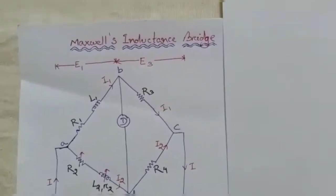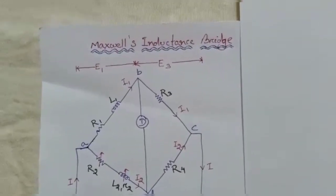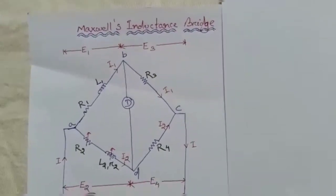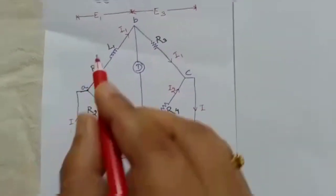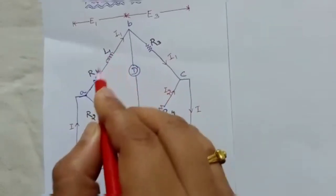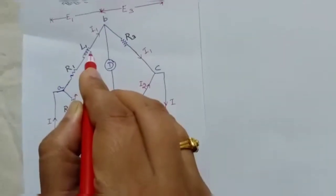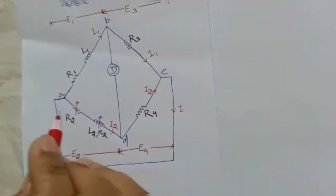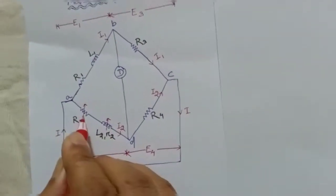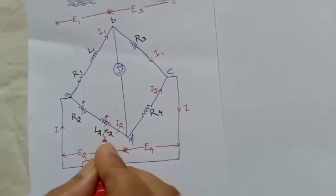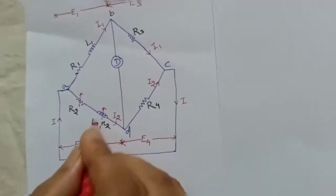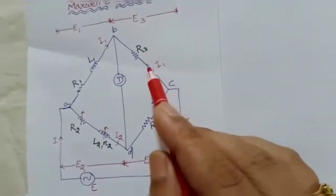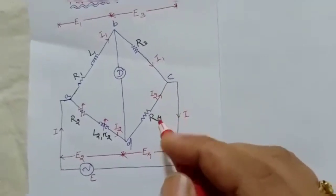Hello everyone. Today we will discuss Maxwell's inductance bridge. With the help of this bridge we can measure the value of unknown inductance. In branch 1, L1 and R1 are the unknown parameters — unknown inductor L1 and unknown resistance R1. In branch 2 we have two variable quantities: one is a resistor and the second one is an inductor, and R2 is the internal resistance of this inductor. In branches 3 and 4, R3 and R4 are two non-inductive resistances.